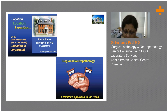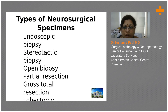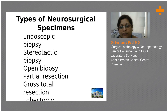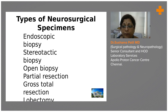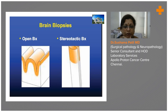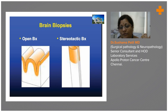So what are the types of samples you get in neuropathology? Typically there could be endoscopic biopsies, stereotactic biopsies, open partial resection, gross total resection, and sometimes even lobectomies. These are the types of samples we come across. There is also a distinction between stereotactic biopsy versus open biopsy.